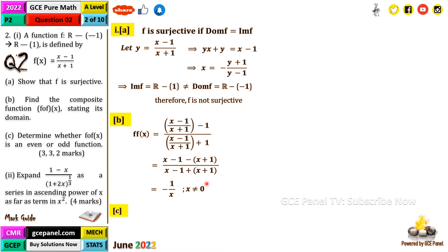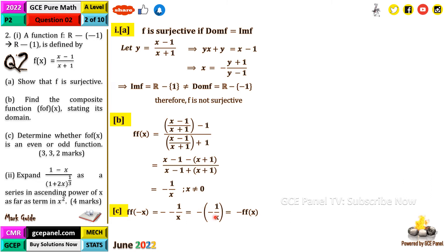So f∘f(−x): substituting −x into −1/x gives −1/(−x) = 1/x. Factoring out the negative sign from −1/x, we see this equals −f∘f(x). Since f∘f(−x) = −f∘f(x), the function is ODD.